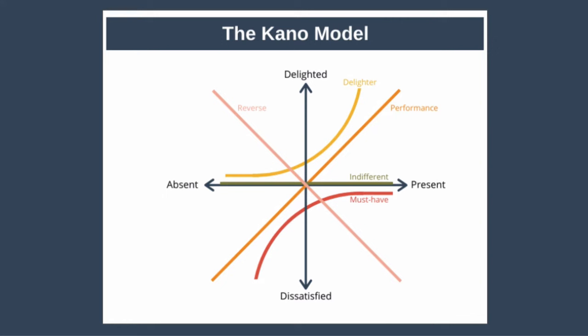Next we have delight or delighter features — features that your customer doesn't expect, but which make them delighted if they are present. Delight features are represented by the yellow line on the diagram. If these features are absent, your customer is completely neutral, so the line never goes below the x-axis, because customers aren't expecting the feature and its absence doesn't dissatisfy them. But if the feature is present, the customer is extremely happy, which is why you can see the steep curve. In our hotel example, this might mean getting a room upgrade when you check in or finding champagne and flowers in your room upon arrival.